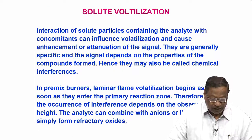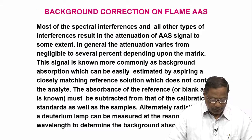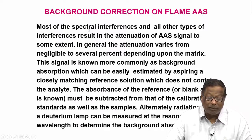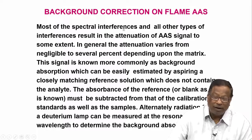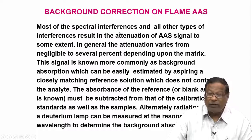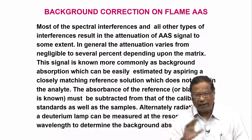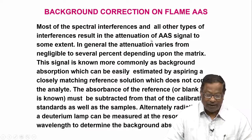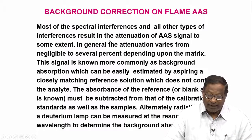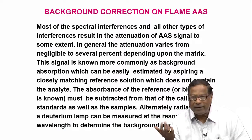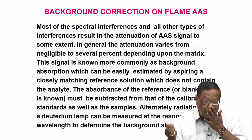We have discussed all these things in detail, and now we will consider how to correct some of the interferences that occur in atomic absorption. This is called background correction in flame atomic absorption spectrometry. Whenever there is a change in the absorbance due to any extraneous factors, we correct those extraneous factors so that the signal remains intact. Most of the spectral interferences and other types result in the attenuation of the atomic absorption signal. Any reduction or increase in absorbance more than 10 percent is called an interference.